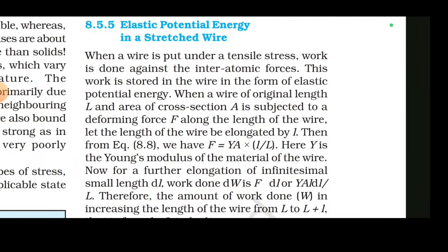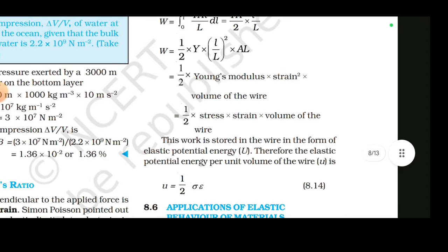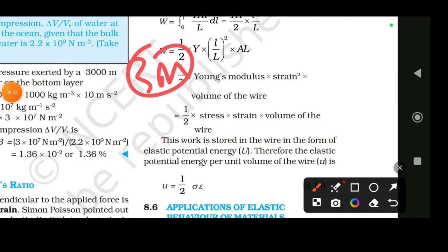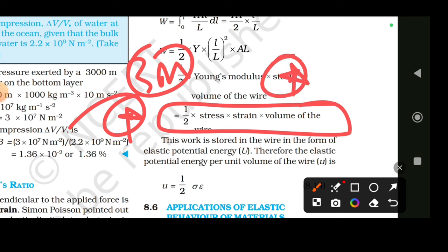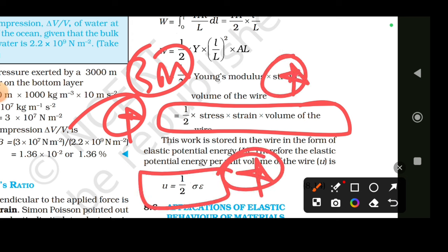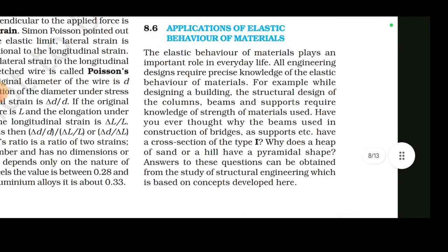Elastic potential energy in a stretched wire — the derivation is worth 3 marks. The final equation is: U = half × stress × strain × volume of the wire. This equation is very important. Next: applications of elastic behaviour of materials.